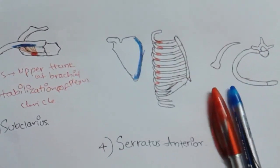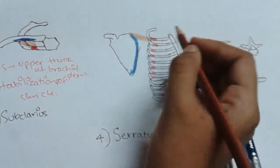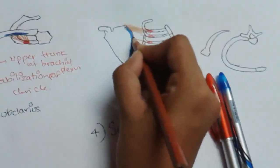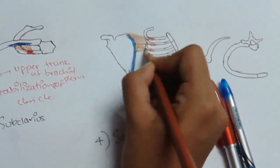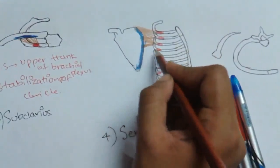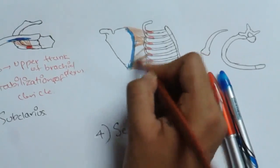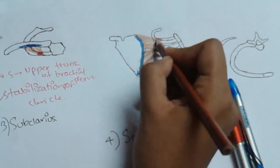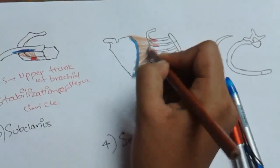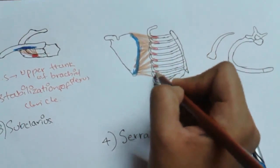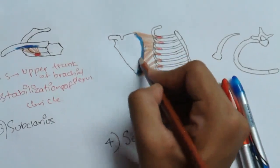More specifically: the first digitation attaches to the superior angle of the scapula; the 2nd and 3rd digitations attach to the medial border of the scapula; and the 4th, 5th, 6th, 7th, and 8th digitations attach to the inferior angle of the scapula — all on the costal surface.